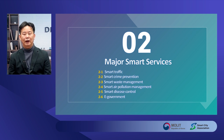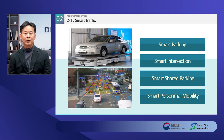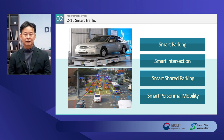Now let me explain actual implementation examples of key smart services such as traffic, crime prevention, and e-government. With the expansion of urbanization, most cities have serious traffic problems. Expanding roads infinitely has its limit due to the lack of government budget. Smart transportation service is to identify the cause of traffic problems in the city and solve them using digital technology. The main service types are parking, traffic safety, public transportation, climate change response, and establishment of traffic policies based on real-time traffic information collection.